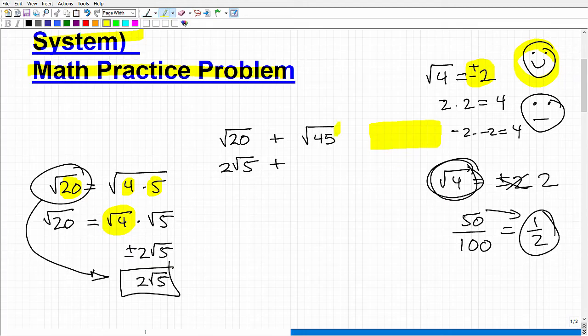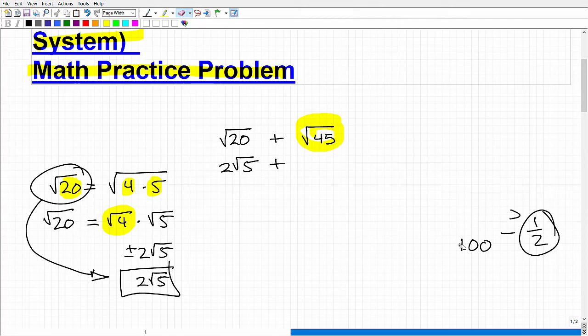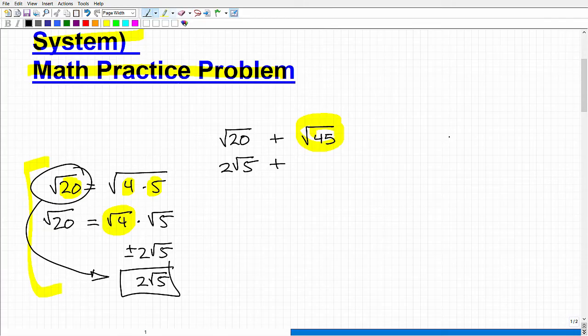Now we're going to add that to the square root of 45. Let's take a look at the square root of 45 and follow the same idea. If you remember this from your math classes, let's do the same thing with the square root of 45. Let's think of some factors of 45. How about the square root of 9 times 5? 9 times 5 is 45.